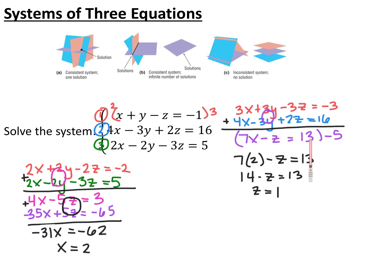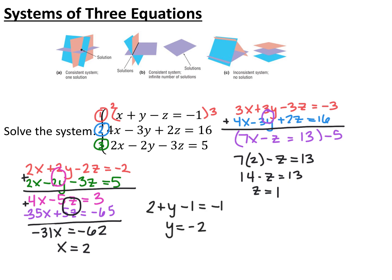Plugging x equals 2 into the equation 7x minus z equals 13, I get 14 minus z equals 13, so z equals 1. Now I have x and z and can plug them into any of the three original equations to solve for y. I chose the first equation because it has no coefficients, so 2 plus y minus 1 equals negative 1, giving y equals negative 2. Just like with a system of two equations with no context, the answer is a coordinate — in this case a coordinate triple: x, y, z.